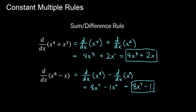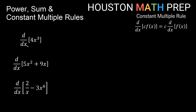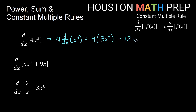The constant multiple rule says the derivative of a constant times a function equals the constant pulled outside times the derivative of the function. This is different from the constant rule, where the derivative of a constant by itself is zero. For example, the derivative of 4x cubed: factor out the 4, take the derivative of x cubed using the power rule — the 3 comes out front giving 3x squared — and then 4 times 3x squared gives 12x squared.